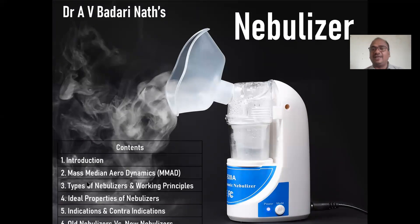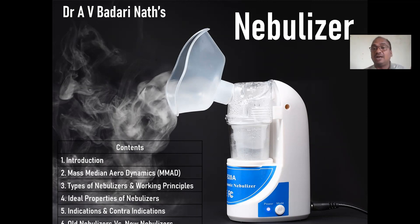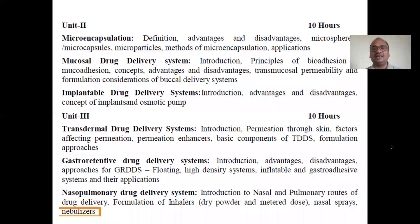The topics I'll cover here, as per your syllabus, are: introduction, mass median aerodynamic diameter (MMAD) — a very very important one you definitely have to write in the examination — types of nebulizers and working principles, ideal properties of the nebulizer, and indications and contraindications. Nebulizers are not suitable for all types of patients, only certain types. We'll also cover old nebulizers versus new nebulizers.